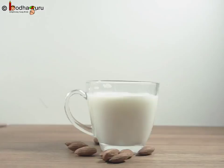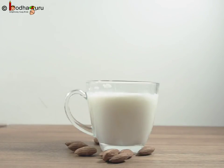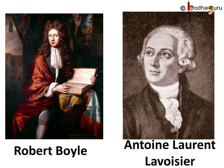Hello everyone. Till now we learnt a lot about different mixtures. So now let's learn about the pure substances used to make mixtures. A pure substance consists of a single type of particles. The first thing that comes into our mind when we say pure is elements.